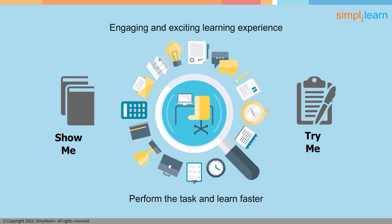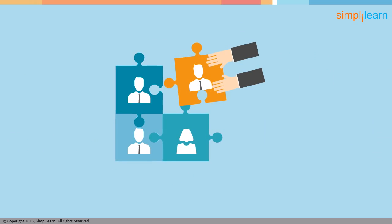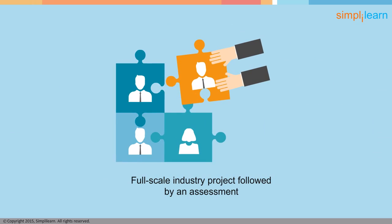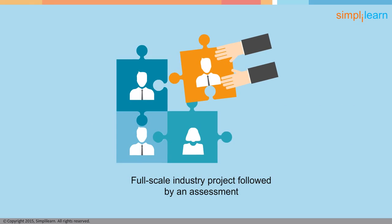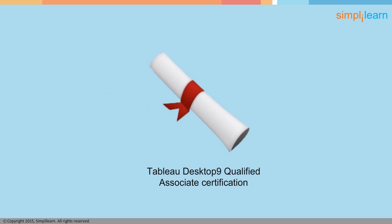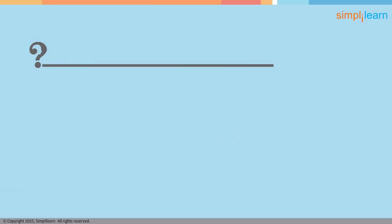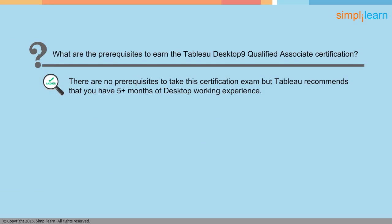SimpliLearn will help you get the Tableau 9 Associate Certification after successfully completing a full-scale industry project, followed by an assessment which is built on exam guidelines and includes knowledge-based and hands-on questions. In addition, SimpliLearn assists you to get an experienced certificate in Tableau Desktop 9 Qualified Associate Certification. There are no prerequisites to take this certification exam; however, Tableau recommends you to have five-plus months of desktop working experience.